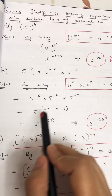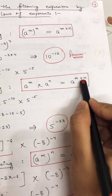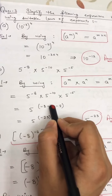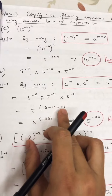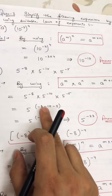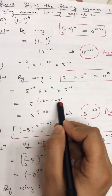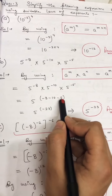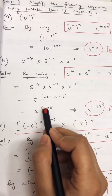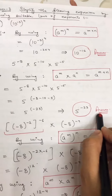So we write 5 one time. All the powers are minus, and since we are adding, minus plus minus plus minus gives minus minus minus. So minus 8, minus 10, minus 5 — adding these three numbers gives 23, and the sign will be minus. So the answer is 5 raised to power minus 23.